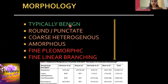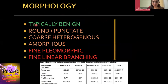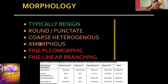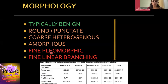Regarding morphology, the descriptors of breast microcalcifications include typically benign types and suspicious types. When calcifications are round, punctate, coarse heterogeneous, or amorphous, we weigh the distribution pattern to reach a final conclusion. When calcifications are fine pleomorphic or fine linear branching, alarm bells are ringing and we proceed to biopsy regardless of other factors.